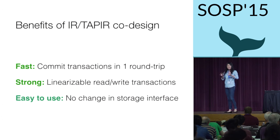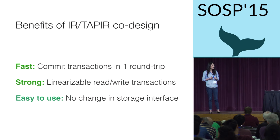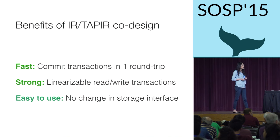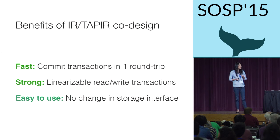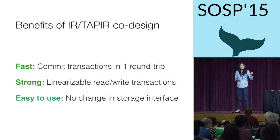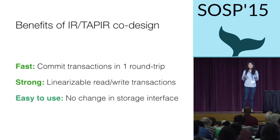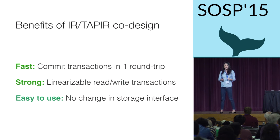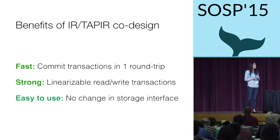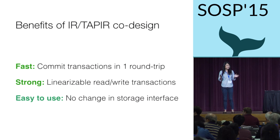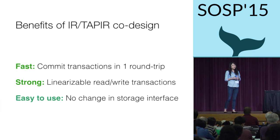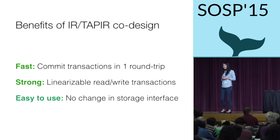Now let's look at what we get from our co-design of IR and TAPIR. IR and TAPIR are fast: provided a quorum of replicas in each partition agrees, we can commit transactions in a single round trip. We can still provide very strong guarantees — linearizable transaction ordering for general-purpose read-write transactions, the strongest possible guarantees. Best of all, none of the applications have to see this complexity. The complexity of IR and TAPIR together is completely hidden behind the transaction layer, so from the application's point of view, TAPIR looks like a normal transaction protocol that just happens to be a little faster.